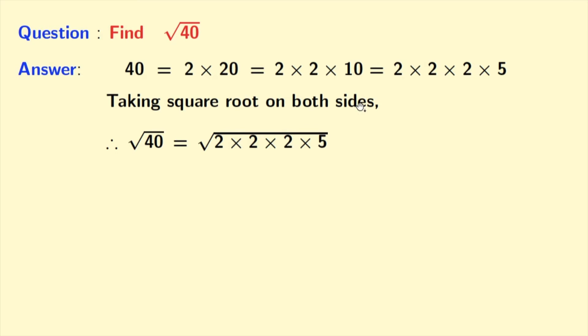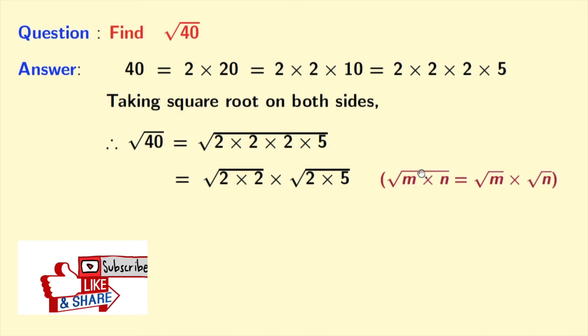we get square root of 40 is equal to square root of 2 times 2 times 2 times 5. Now we will rewrite it as square root of 2 times 2 times square root of 2 times 5. Here we have used this technique: square root of m times n is equal to root m times root n.